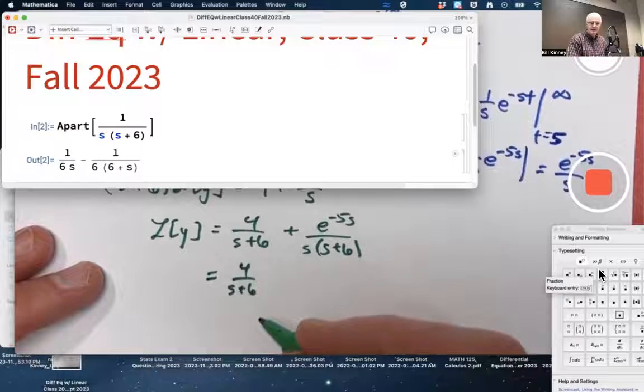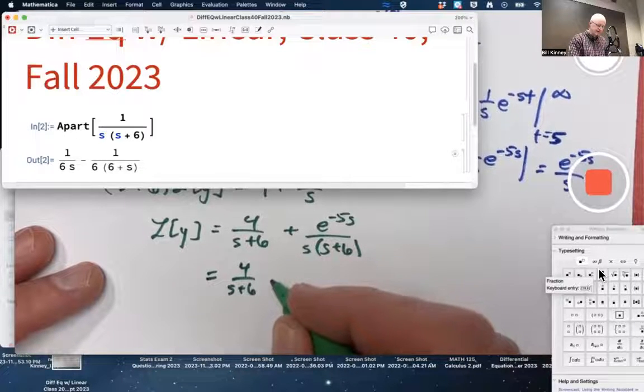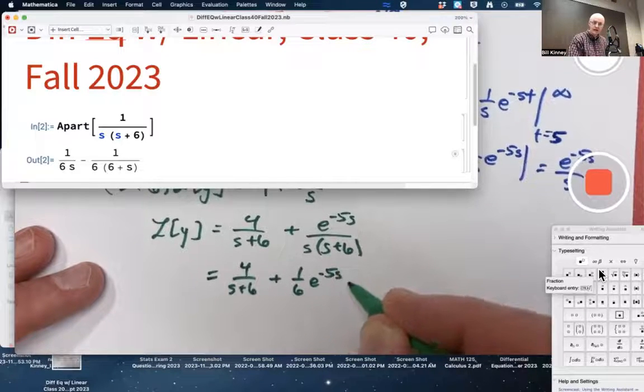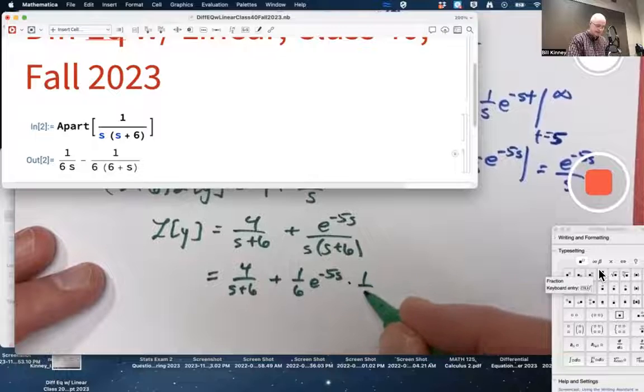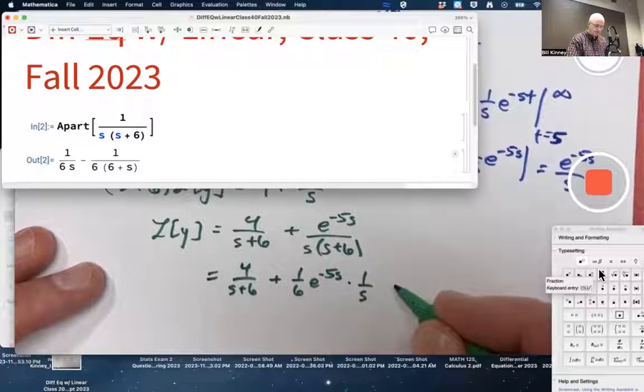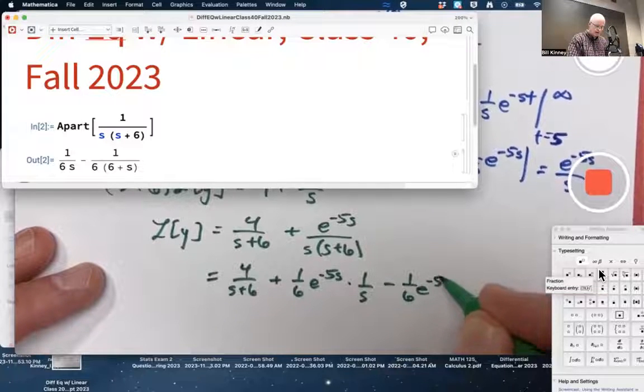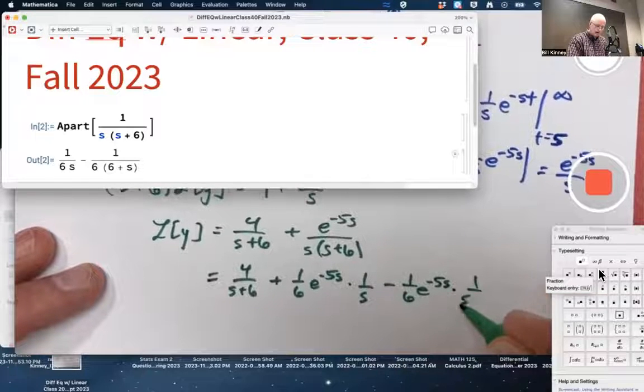Their Mathematica is breaking those fractions apart. So it turns out if you did it by hand, you would get a one-sixth and a negative one-sixth for the coefficients. Ultimately, this function can be written like this. There we go.